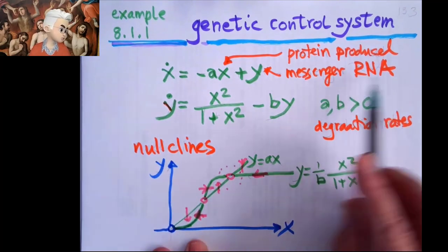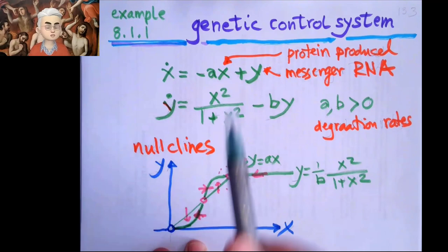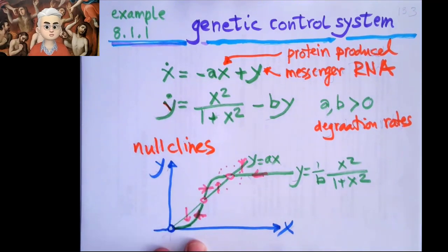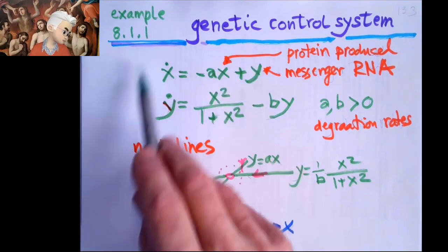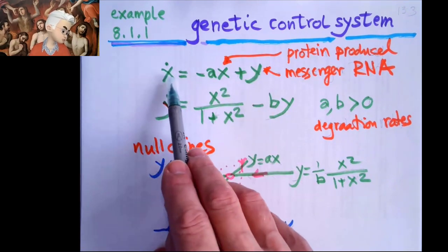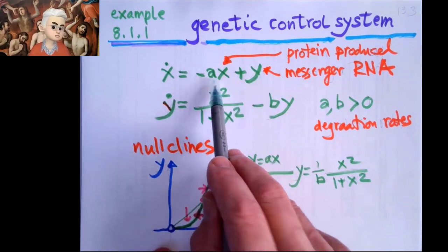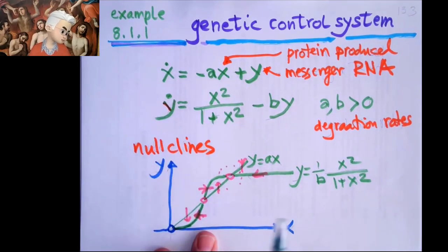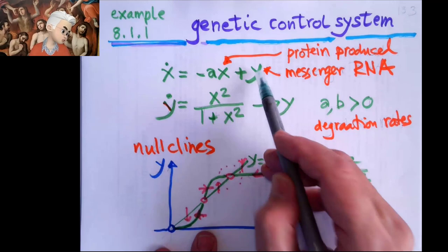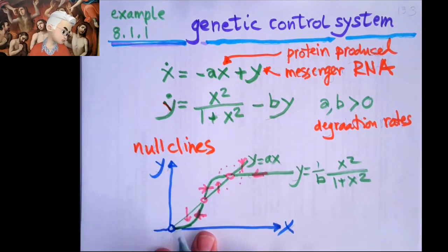But if there is an RNA, it'll kick in and produce proteins. So this first term says, rate of change of protein is birth and death of proteins. And the birth is controlled by how many RNA there are and death is controlled by how many they die.